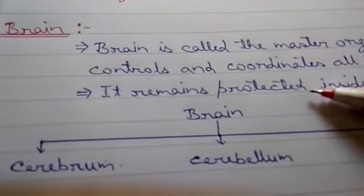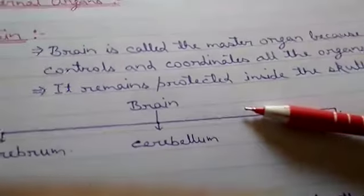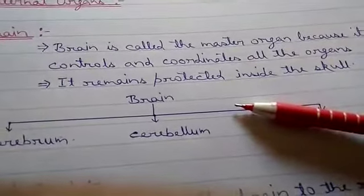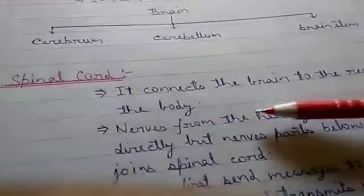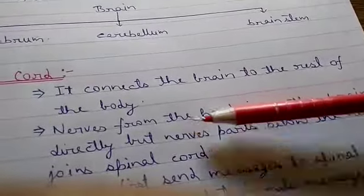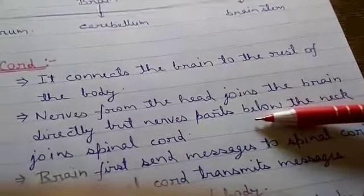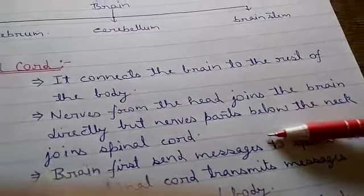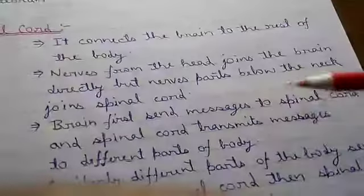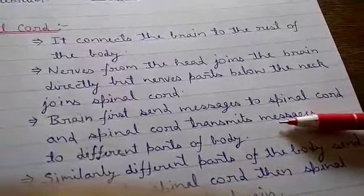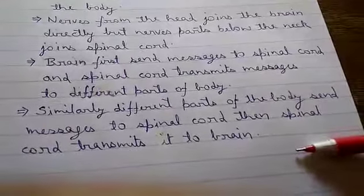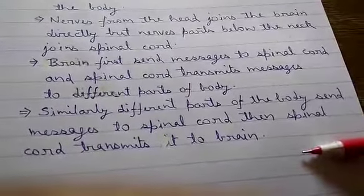To summarize: the brain is called the master organ — it controls and coordinates all the organs and is protected inside the skull. The brain has three parts: cerebrum, cerebellum, and brainstem. The spinal cord connects the brain to the rest of the body. Nerves from the head join the brain directly, while nerves from below the neck join the spinal cord. Messages travel between the brain and body via the spinal cord.